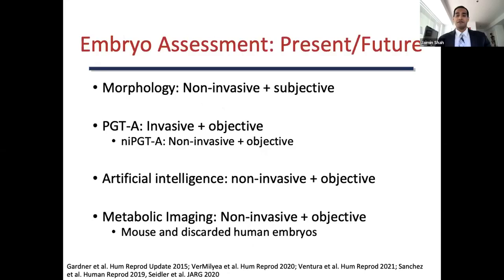Alternatively, pre-implantation genetic testing for aneuploidy, or PGTA, requires an invasive trophectoderm biopsy but is objective. There is developing technology that uses a non-invasive PGTA approach to evaluate embryo culture media, which is still under development. Many studies have published on the utility of artificial intelligence as a non-invasive and objective measure to assist in embryo viability predictions, but currently its use is still limited in clinical care. Despite these technologies, there is still room for improvement in optimizing embryo selection.